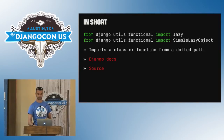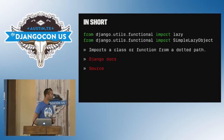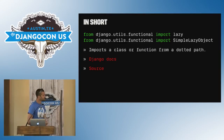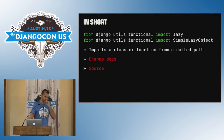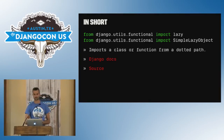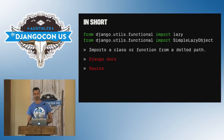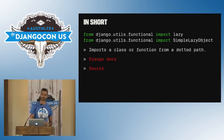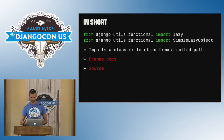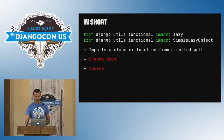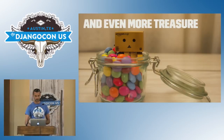So that saved me a lot of time. You'll find both lazy and SimpleLazyObject in django.utils.functional. They're actually fairly easy to use. And that is our third treasure.